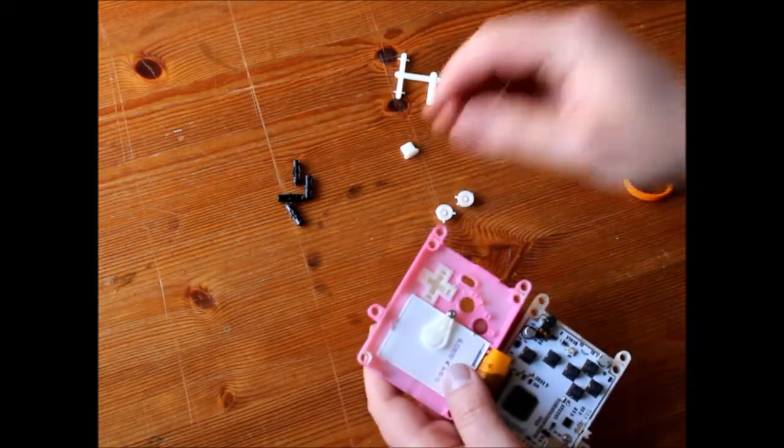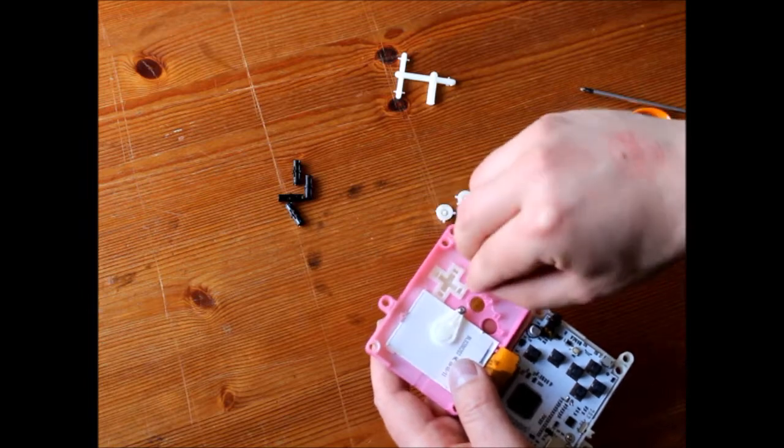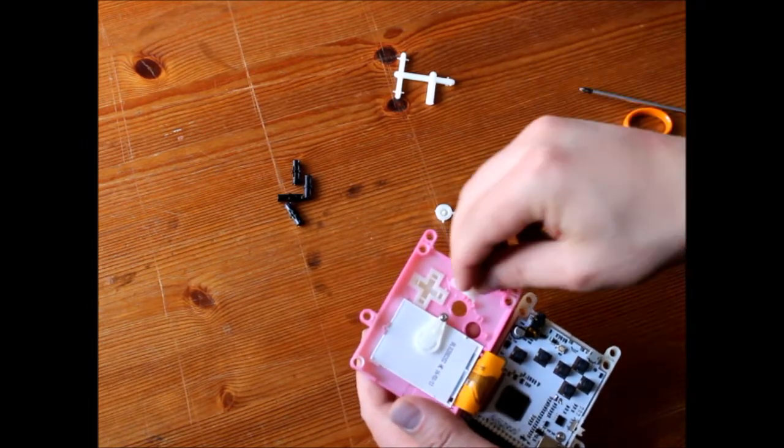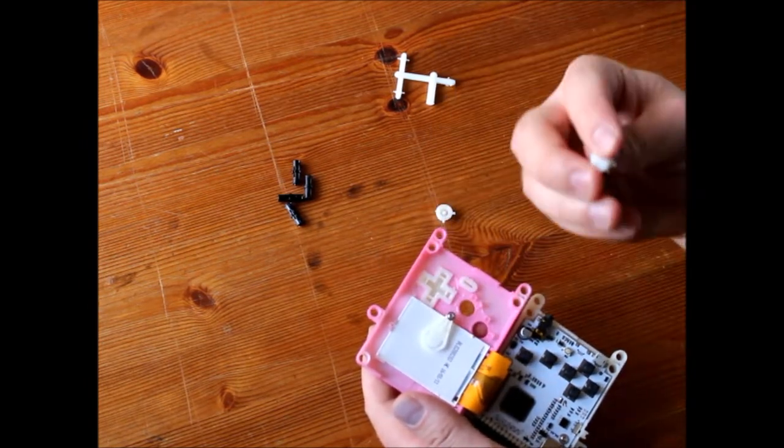Take the navigation keys. Drop them in place. The C key. Drop it in place. This is the B button.